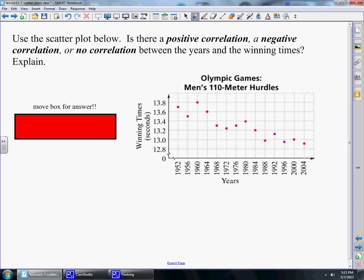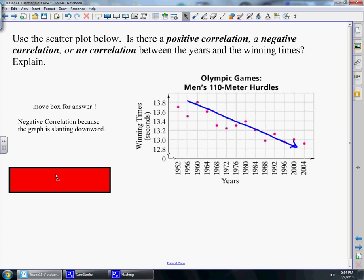We're going to look at this scatterplot here. This shows the years of the Olympics and the times that the runners got running the 110 meter hurdles. As the years went on, what do we see happening with the times? If we were to draw a line here, the times are getting better and better. Their times are dropping. As the years increase, the times start to decrease. So that is going to be a negative correlation because the graph is slanting downward.